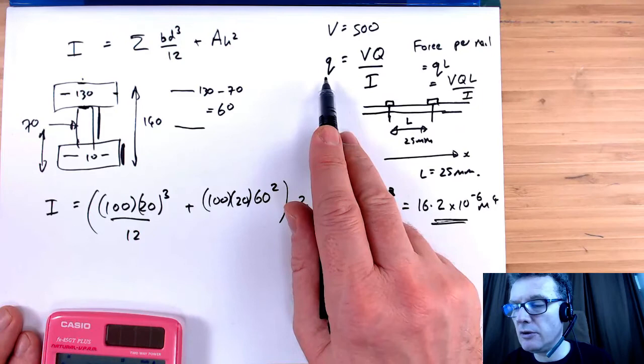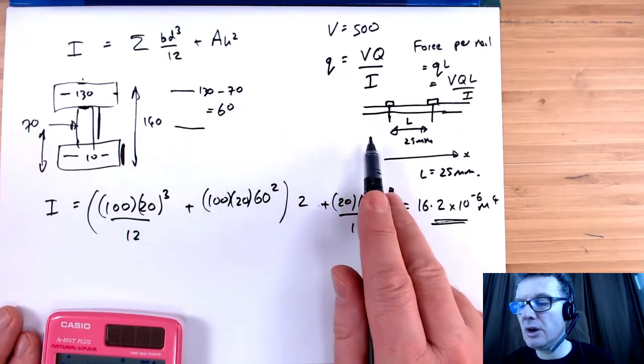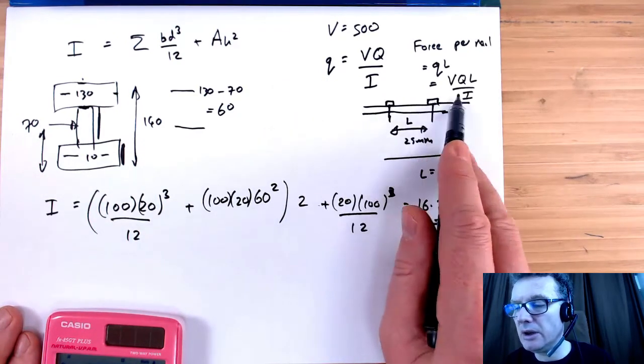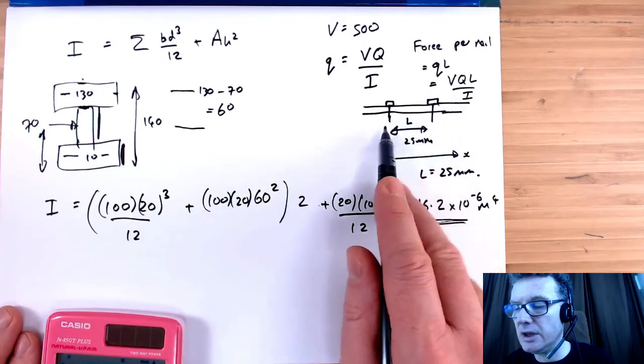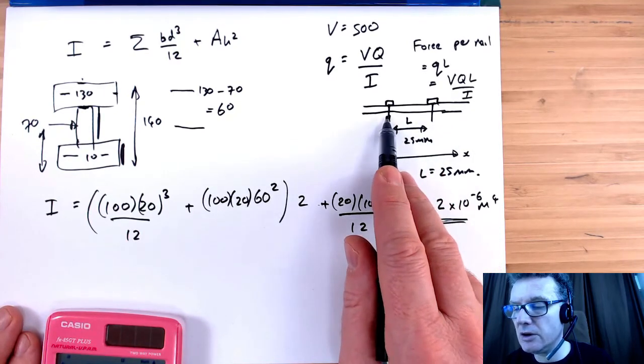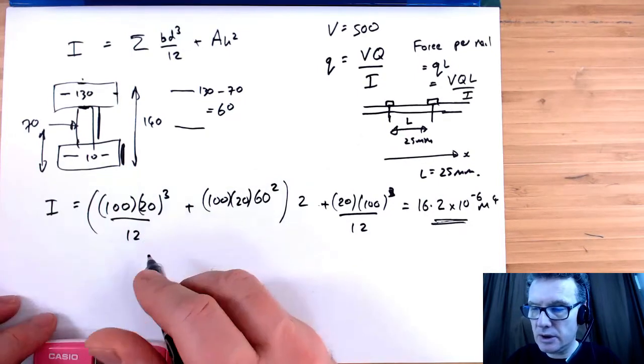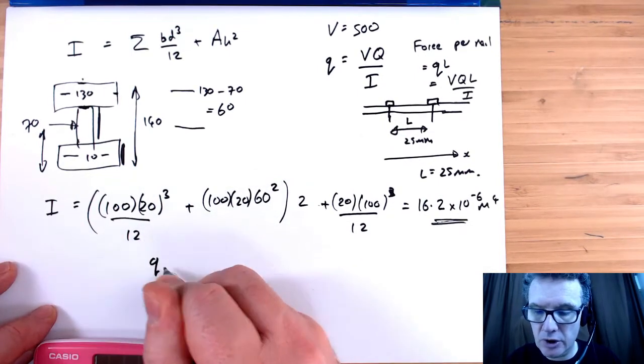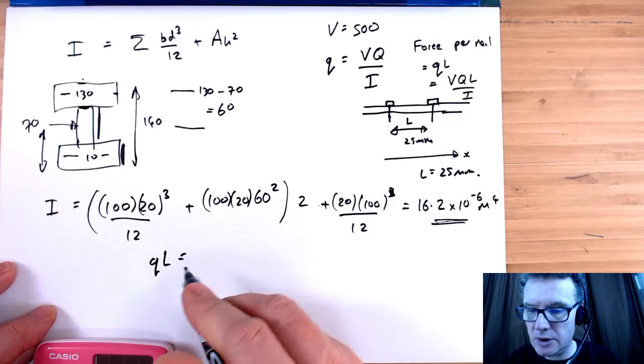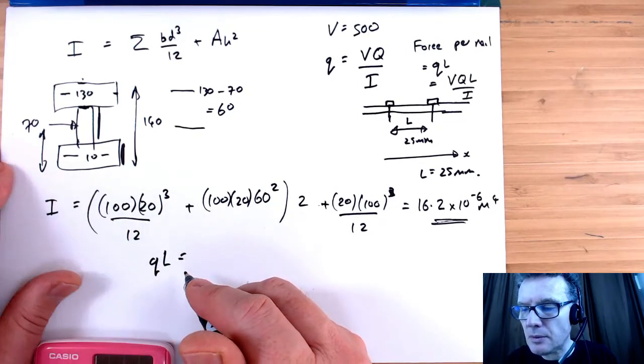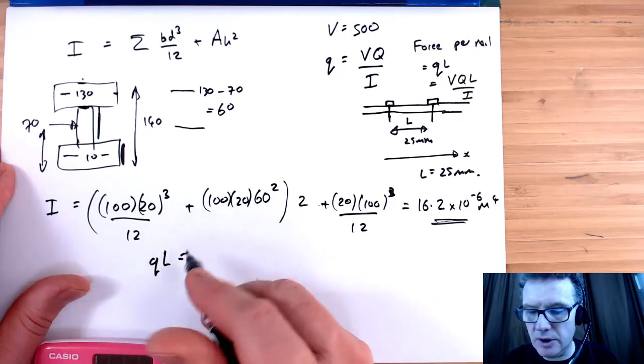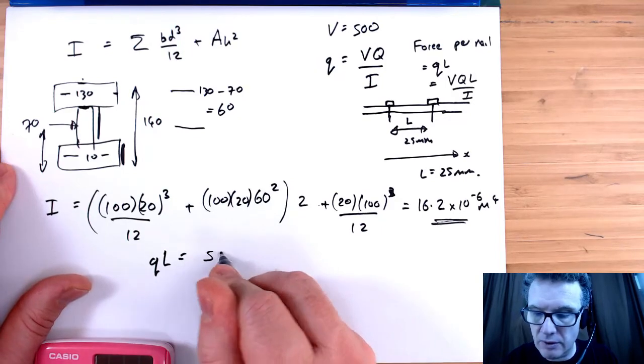So I'm taking my force per unit length, multiplying it by the length to find the shear force acting on the nail. And that is going to be qL times by V, which is 500.